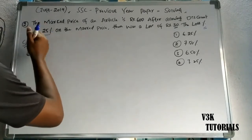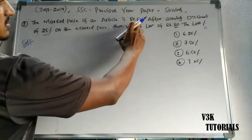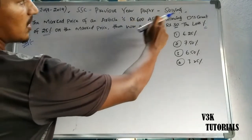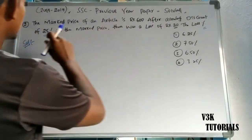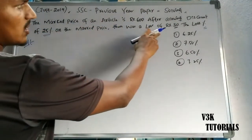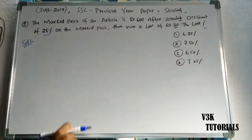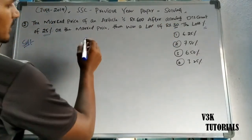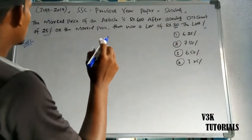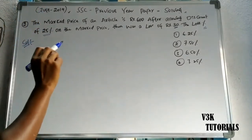The second problem. The market price of an article is 600 rupees. After allowing a discount of 25% on the market price, there was a loss of 30 rupees. We have to find out the loss percentage.